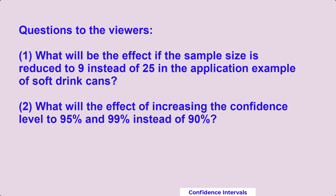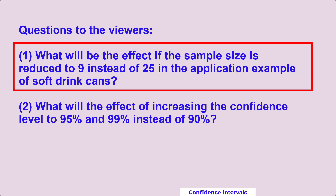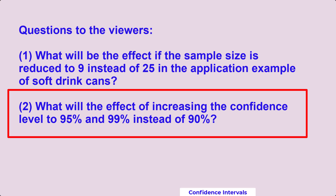Let me ask some questions to the viewers for better learning. Question 1: What will be the effect if the sample size is reduced to 9 instead of 25 in the application example of soft drink cans? Question 2: What will be the effect of increasing the confidence level to 95 and 99% instead of 90%?